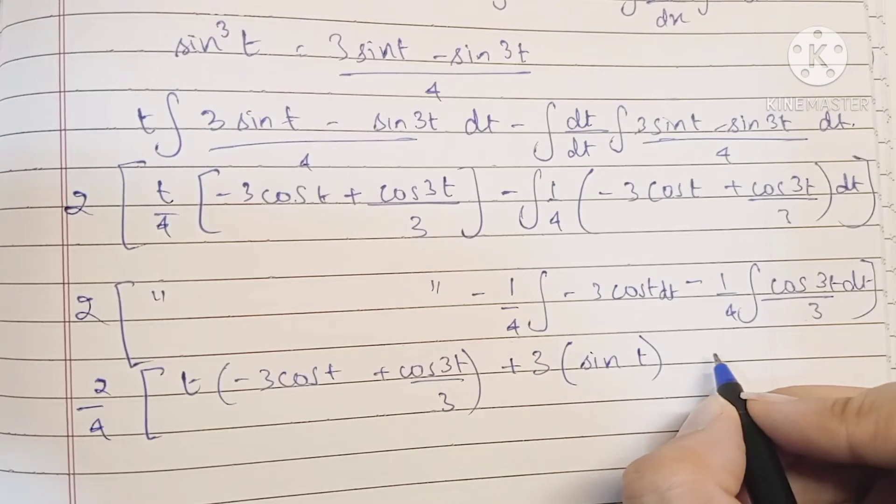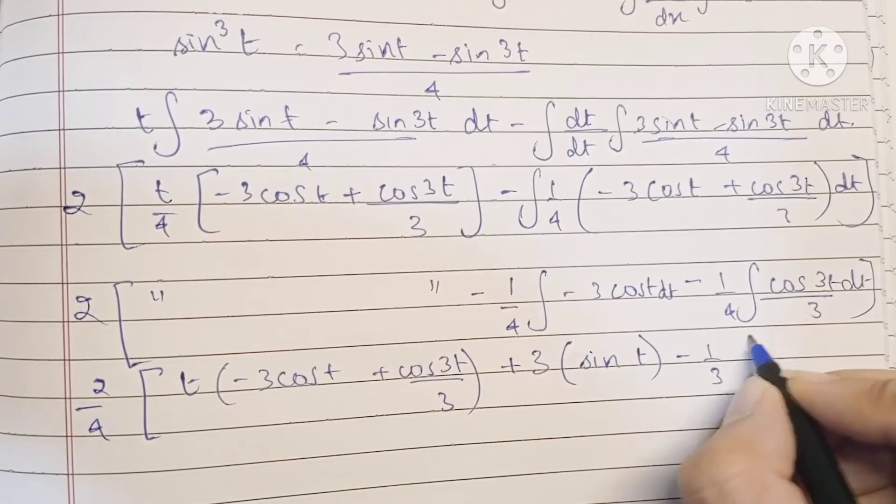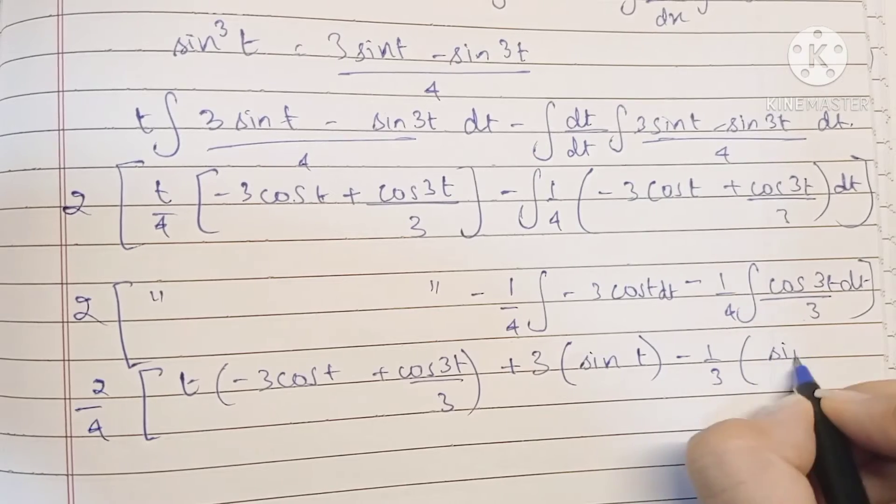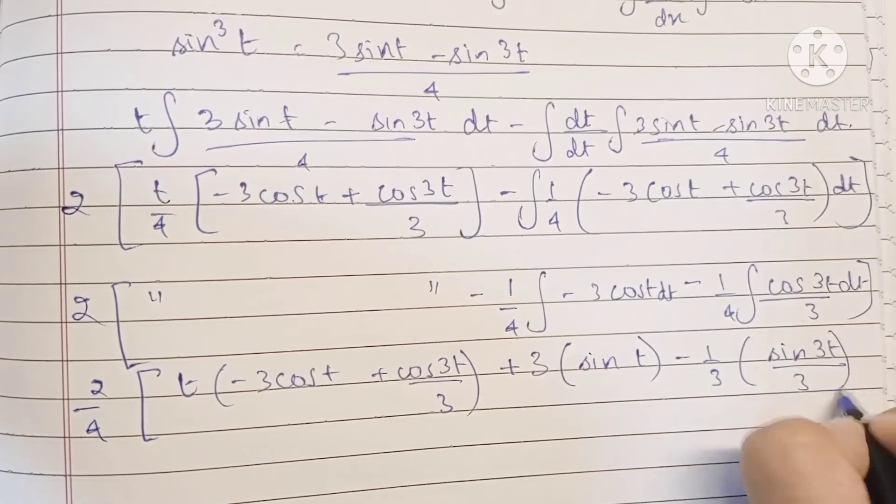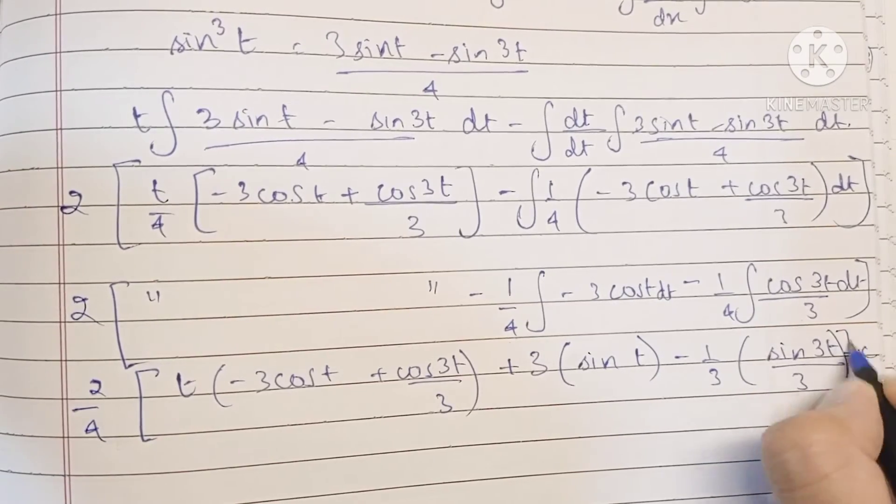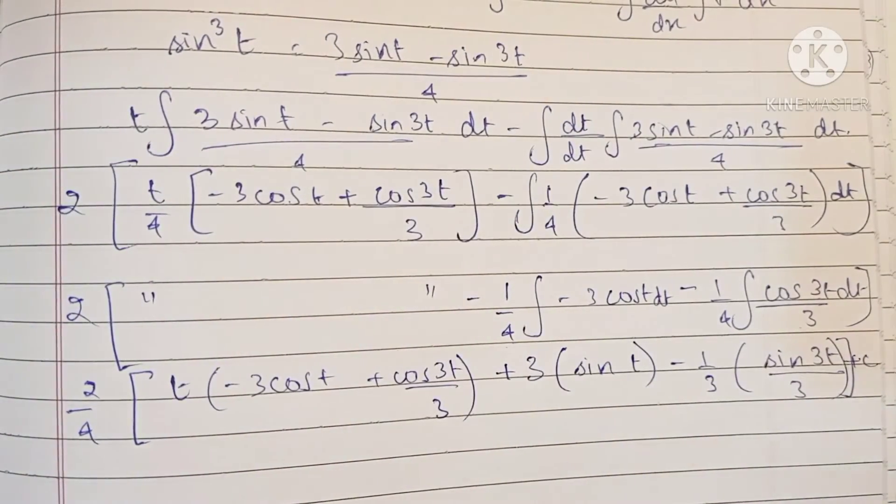Integration of cos is sine, and then 3 comes outside, 1 by 3. So this becomes minus minus minus 1 by 3. Integration of cos t is sine, but here we have 3t, so we have 3 in the denominator also, and plus c.